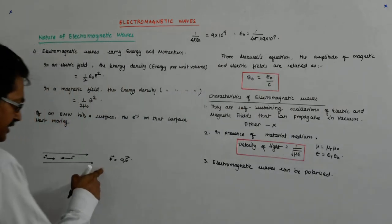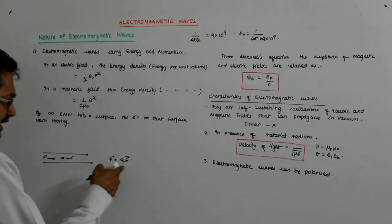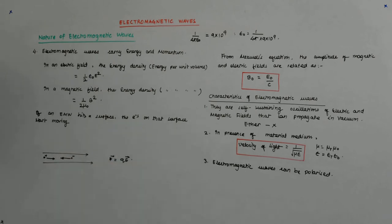Q into E. If it is positive, the force is in the same direction as the electric field. If it is negative, the force is in the opposite direction to the electric field. We get the point? So, the electrons on that surface start moving.